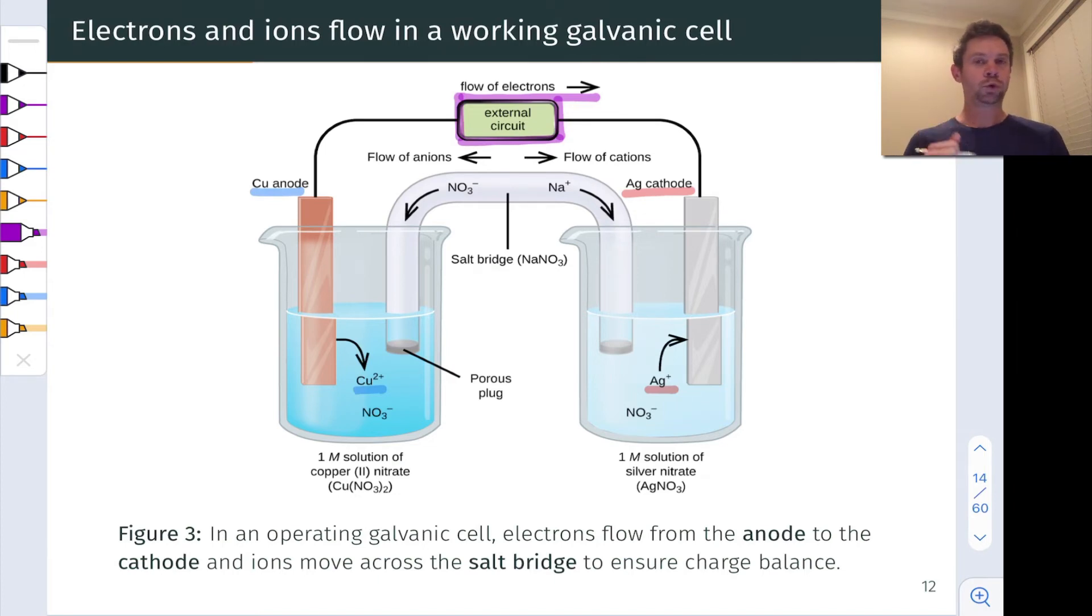Now, there's one more thing we need to talk about. If we think about what happens to the charges as the redox reaction runs, oxidation is occurring on the left. There are copper two plus ions going into solution and electrons flowing through this wire. At the same time, there are silver plus ions coming onto the silver metal. We're losing positive charge from the right-hand side and gaining positive charge on the left-hand side. There's a charge mismatch here.